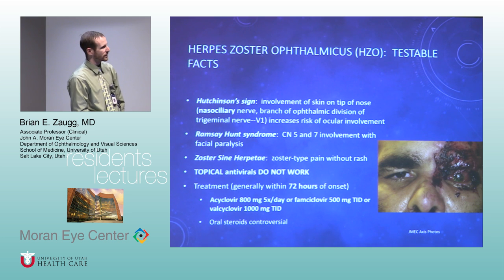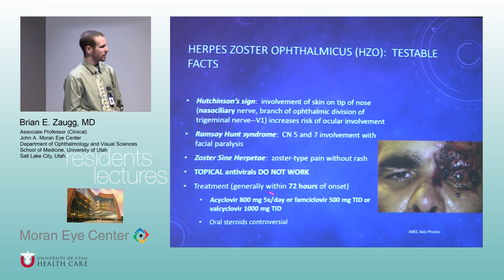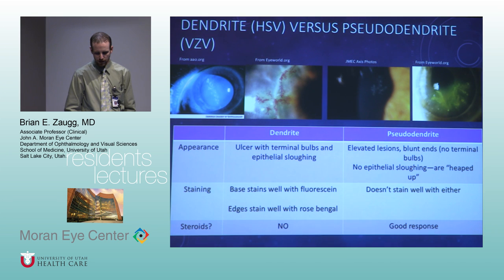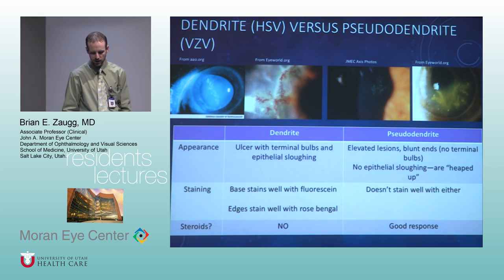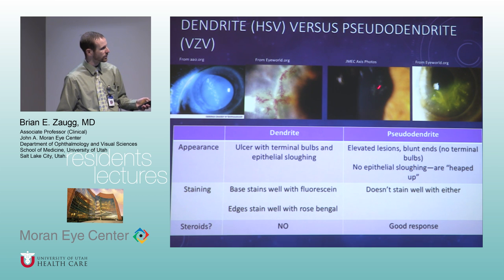Zoster — nobody's going to miss this. Hutchinson's sign: if there's a lesion on the tip of the nose, be more concerned about ocular involvement. Primary care doctors use this to determine whether to get an eye exam. Topical antivirals are not useful here — you use a higher dose of acyclovir and oral steroids. The distinction: dendrite versus pseudodendrite. HSV gives you dendrites; pseudodendrites come with VZV. With HSV dendrites, the base stains with fluorescein and edges stain with rose bengal. VZV pseudodendrites don't really stain well with either, and you usually get scarring at the site of the pseudodendrites.